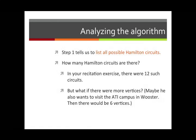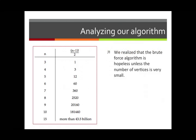Step one tells us to list all possible Hamilton circuits. How many Hamilton circuits are there? Well, in the recitation exercise that you will do, there are 12 such circuits. But if there were more vertices, there's going to be a lot. We learned this formula: if there are n vertices, then there are (n minus 1) factorial divided by 2 possible Hamilton circuits in that graph. That's a number that grows very large as n grows, and some examples are here to remind you. We quickly realize that the brute force algorithm is hopeless unless the number of vertices is very small.